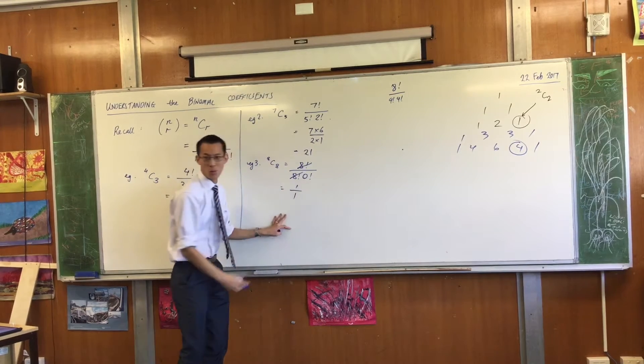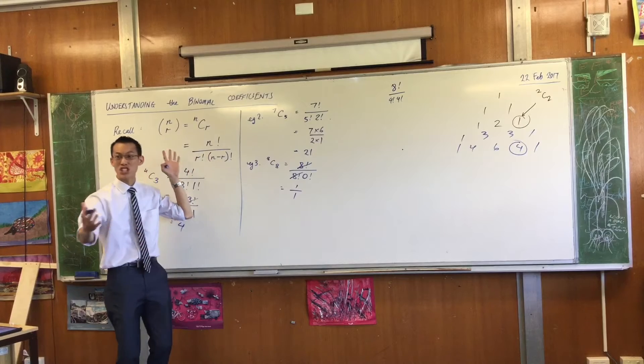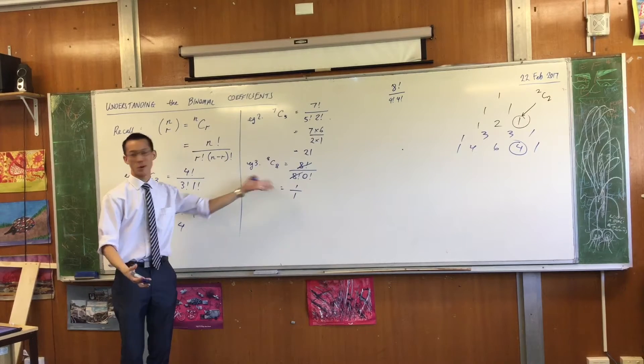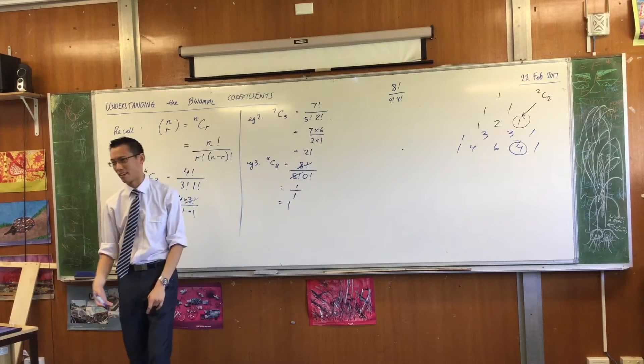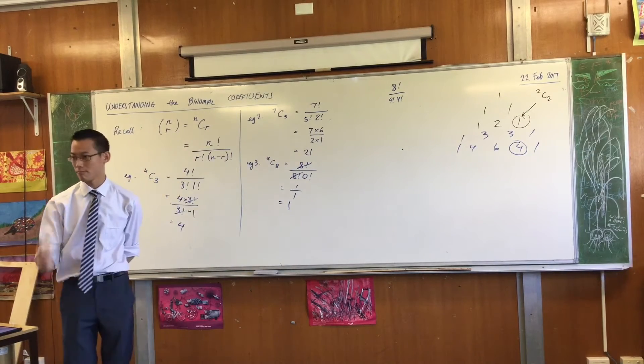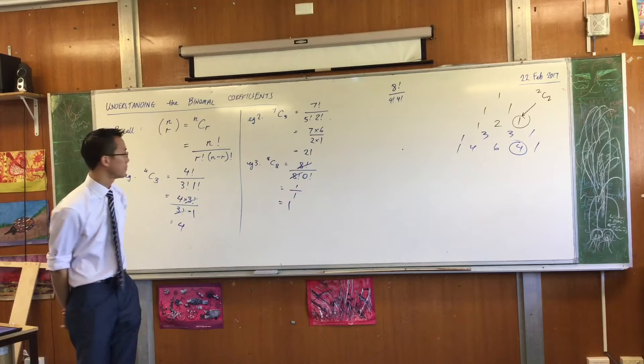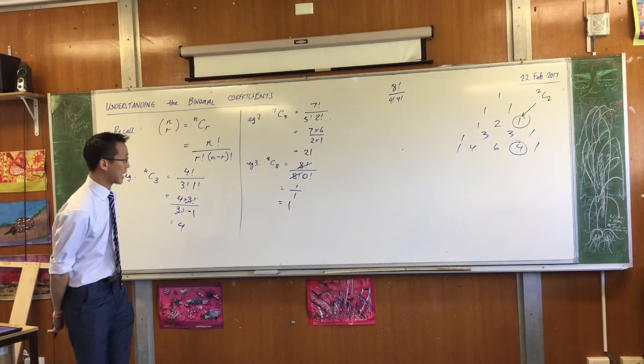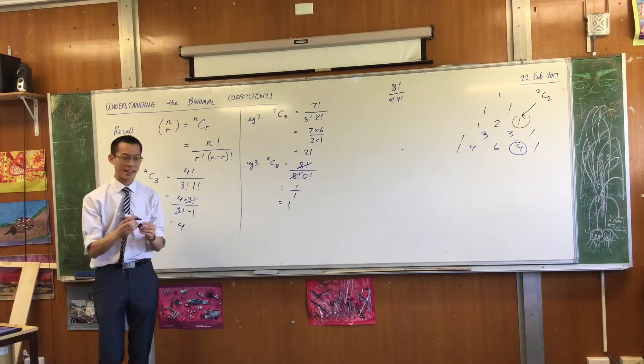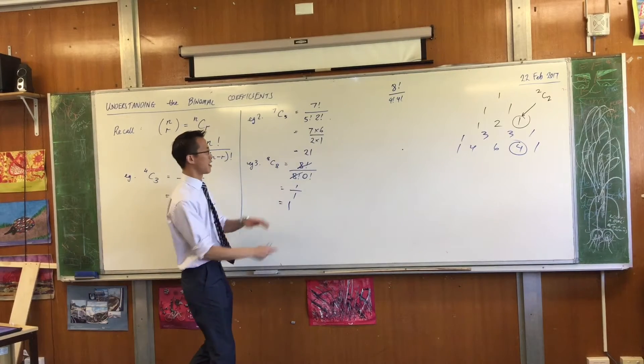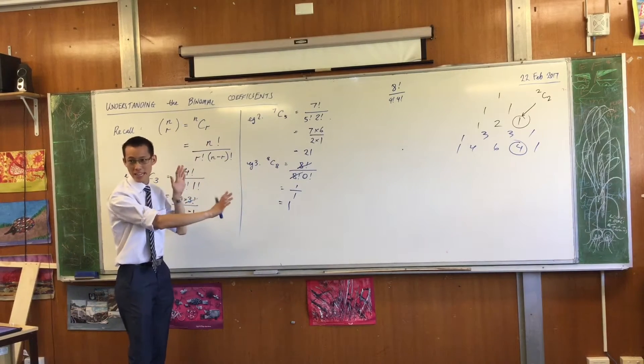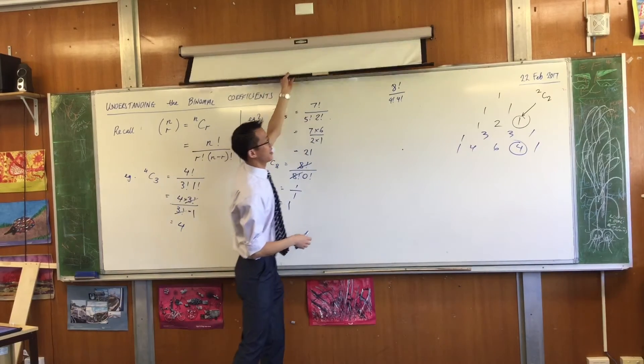So therefore you see it's not just a cute trick that zero factorial is one by definition. Remember we've reverse engineered it. It has to be one, otherwise the whole Pascal's triangle just explodes. Okay, so there's another reason why, and as you confirmed it's the n, in this case where n is eight, it's on the nth row. So that's why it's one.